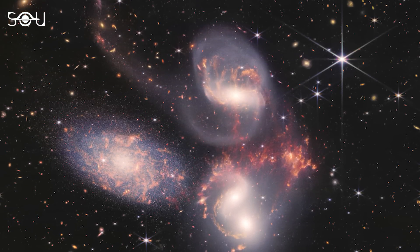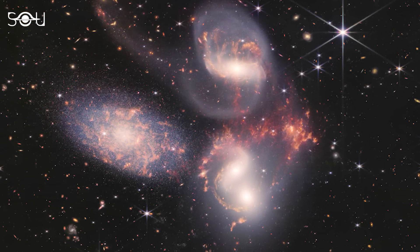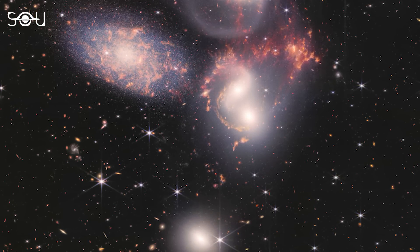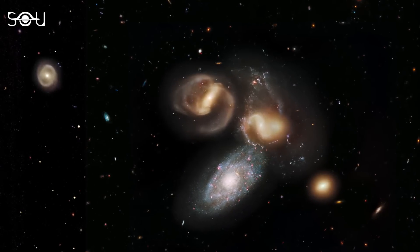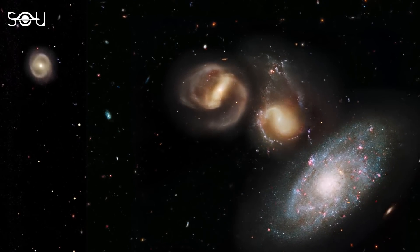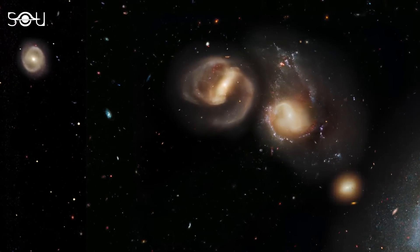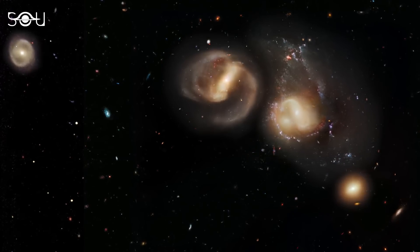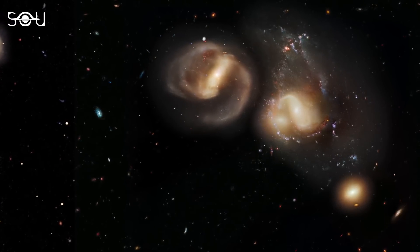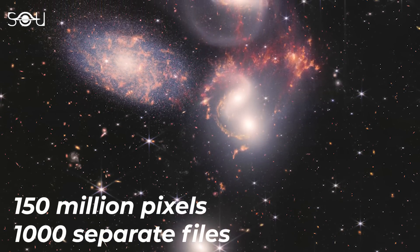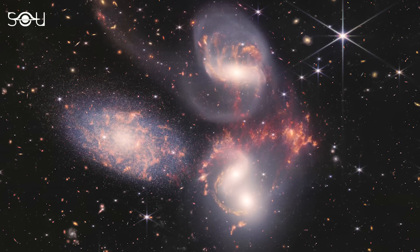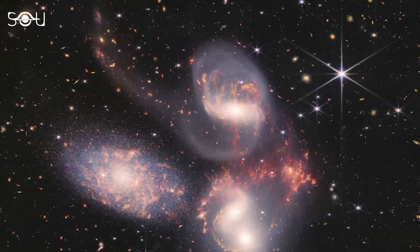The fourth image in Webb's collection is an enormous mosaic of Stephan's Quintet, a visual cluster of five galaxies captured by NIRCAM and MIRI. Although this group is referred to as a quintet, only four galaxies can be seen close together, with the fifth lying in the foreground compared with the other four. And what makes this image extremely special is that it is the largest image taken by Webb. It contains over 150 million pixels and is constructed from almost 1,000 separate image files.